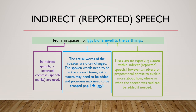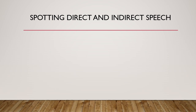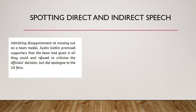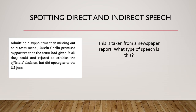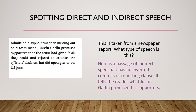Now we know both types and the differences between them. Let's look at some more examples — spotting direct and indirect speech. This section is taken from a newspaper. I'll read it to you: "Admitting disappointment at missing out on a team medal, Justin Gatlin promised supporters that the team had given it all they could and refused to criticise the official's decision, but did apologise to the US fans." Pause the video and tell me what type of speech this is and the reason why. This is a passage of indirect speech. We can tell because it has no inverted commas or reporting clause. It tells the reader what Justin Gatlin promised his supporters.